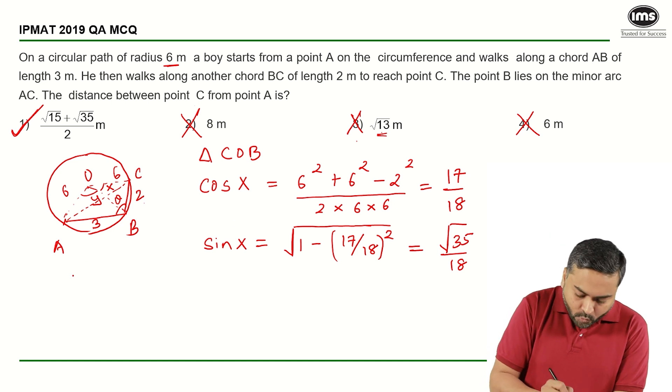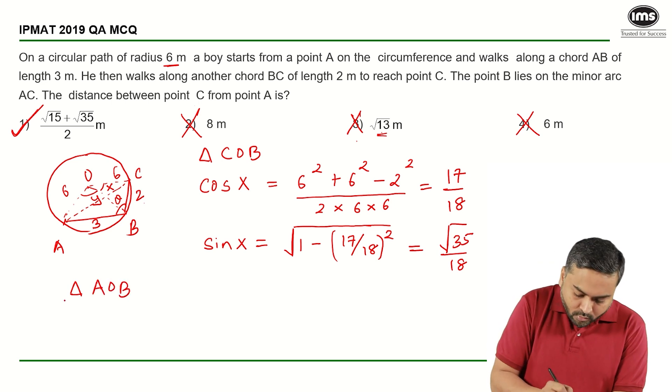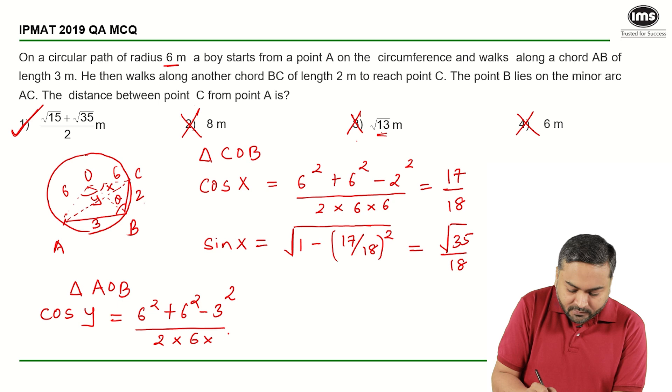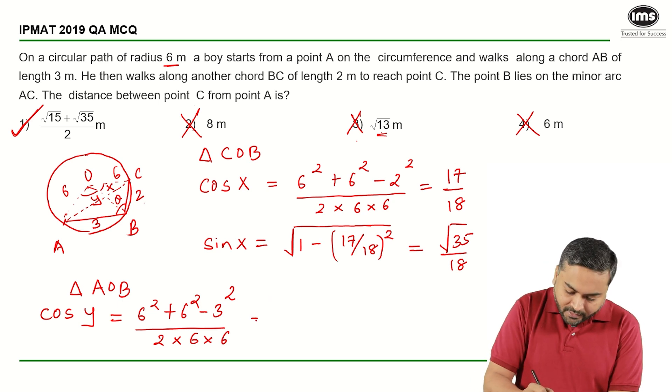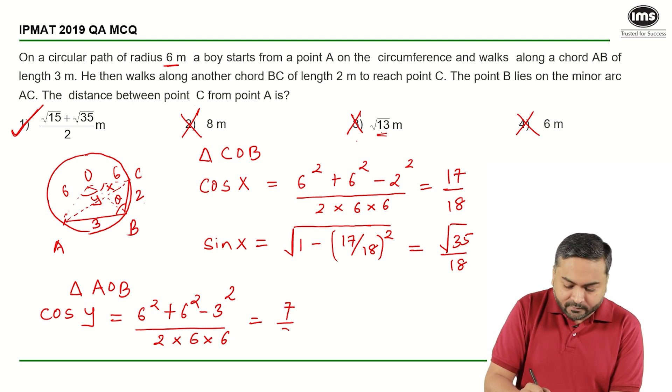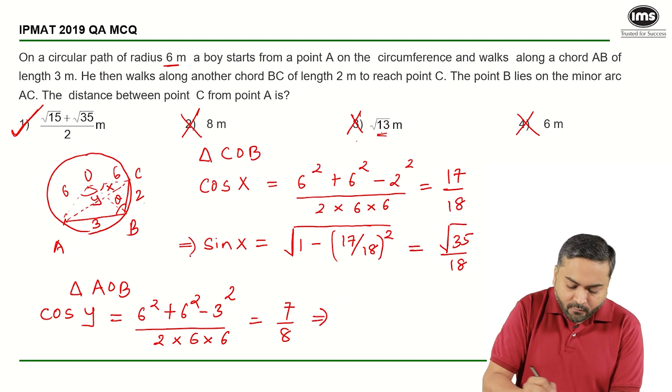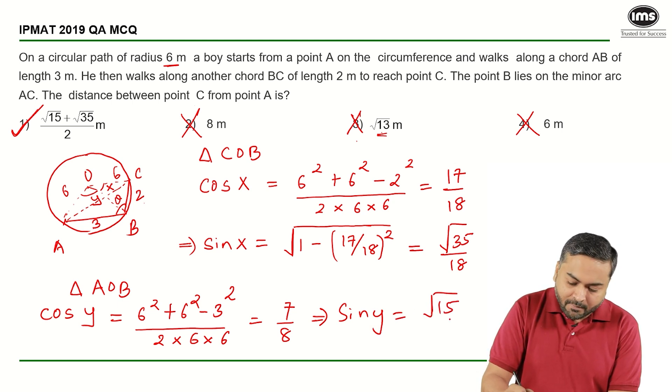Similarly, if I apply cosine rule in triangle AOB, so now I will get what is cos y. Cos y will be 6 square plus 6 square minus 3 square upon 2 into 6 into 6. So basically I will have 72 minus 9, 63, that is 7 by 8 is what I have. And similarly using the rule that we applied here for sin x, if I find sin y, so that will come out to be root 15 by 8.